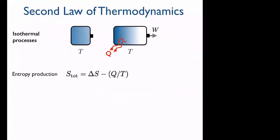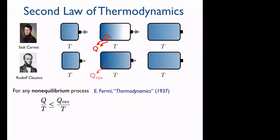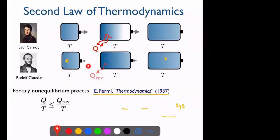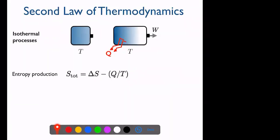Question: What is the difference between the two expansion cases? The answer: one is infinitely slow and the other is at any finite speed. The upper case is infinitely slow (reversible), and the lower is at any finite speed.